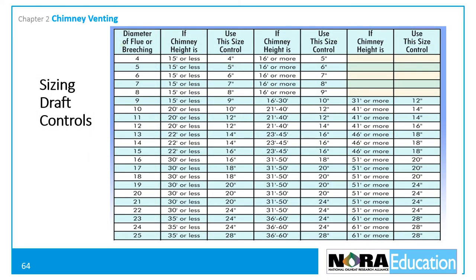For most applications, appliance manufacturers recommend that the draft control should be the same size as the flue pipe. Tall chimneys often require larger controls to prevent overdrafting. For example, an appliance with a 6-inch flue pipe typically requires a 6-inch control if the chimney is 15 feet high or less; however, a 7-inch control is recommended if the chimney is 16 feet or higher. During high draft conditions, a smaller control may not be able to completely manage the excessive draft load.